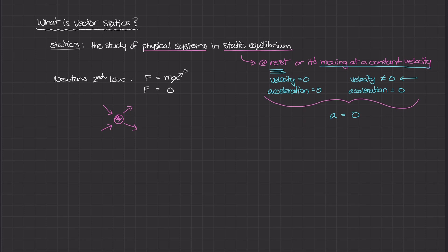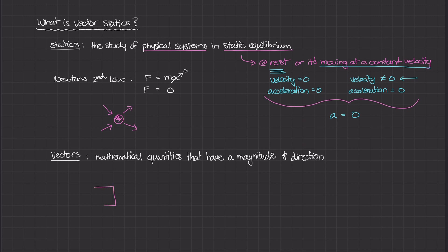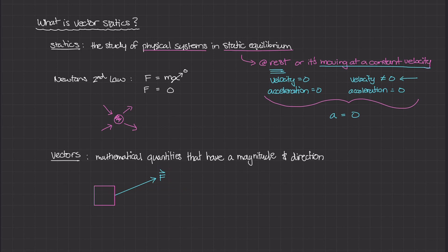Vectors are mathematical quantities that have both a magnitude and a direction. Say you have a box sitting on the ground at rest, and you apply a force by pulling it. This force vector is at a certain angle above the horizontal — up and to the right a little bit, with a vertical component. When representing this force in a statics problem, it must be represented as a vector, because both the magnitude of that force and the direction in which it's applied are both important in the study of statics.